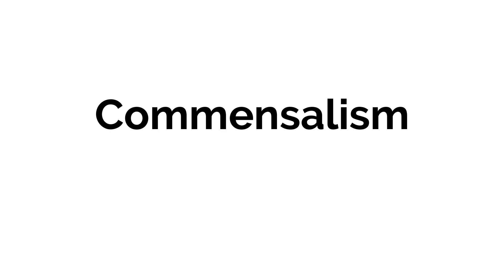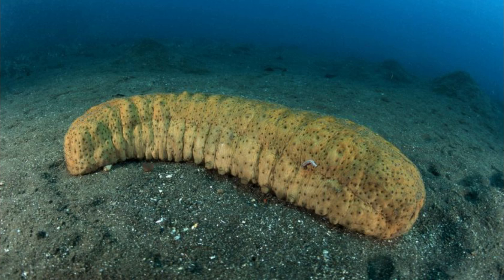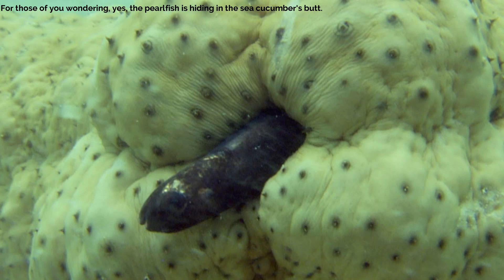The third form of Symbiosis is called Commensalism. Commensalism is a form of Symbiosis where one member benefits off of the other, while the other member does not receive any benefit or harm. One instance of Commensalism involves the Sea Cucumber. The Sea Cucumber itself is not very impressive, but its relationship with another organism is. What you see here is not photoshopped — this is a picture of a Pearlfish inside a Sea Cucumber. Out in the open, the Pearlfish is vulnerable to predators, but inside the Sea Cucumber it is relatively safe due to the Sea Cucumber being somewhat repulsive to predators.